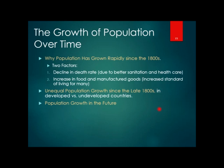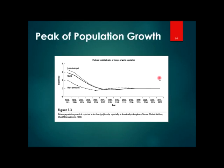World population has grown rapidly since the 1880s due to two factors: a decline in death rate due to better sanitation and healthcare, and an increase in food and manufactured goods raising the standard of living for many. A graph shows the population growth rate over time, with time on the x-axis and growth rate on the y-axis, covering both past and predicted rates of change in world population.